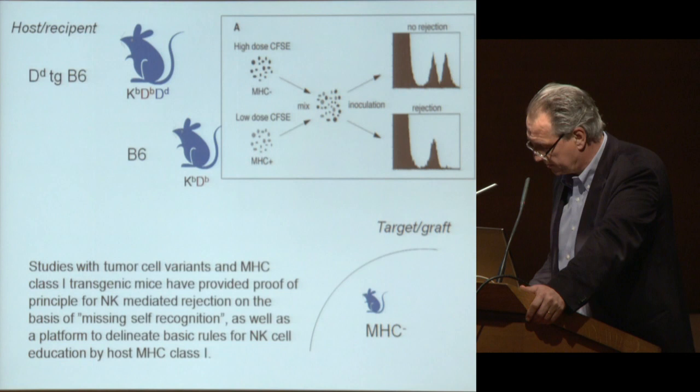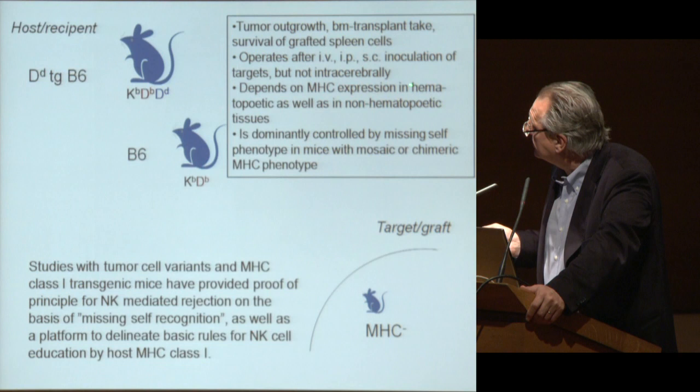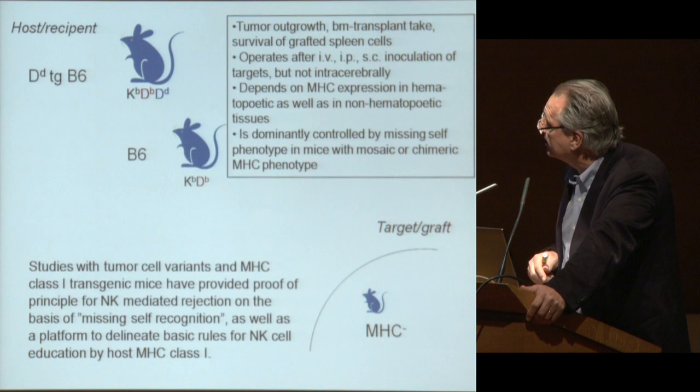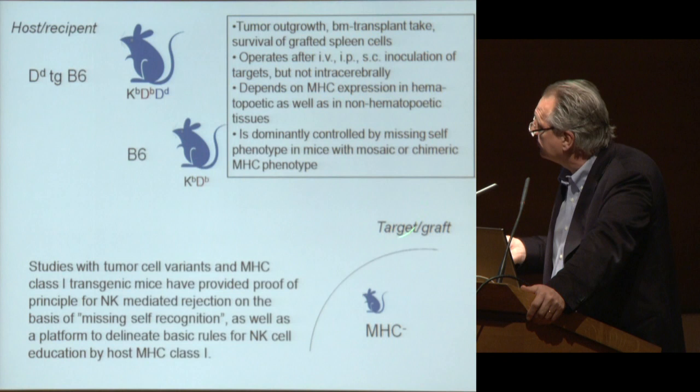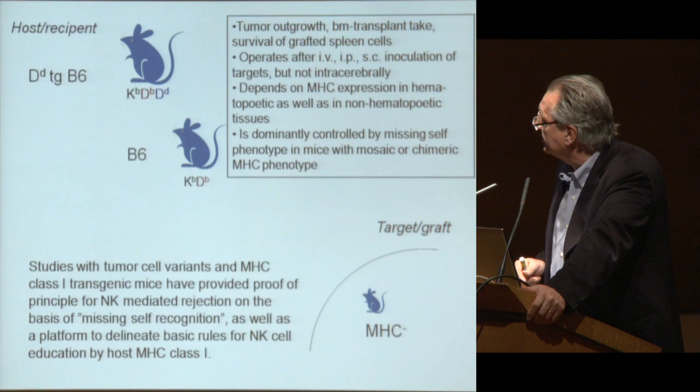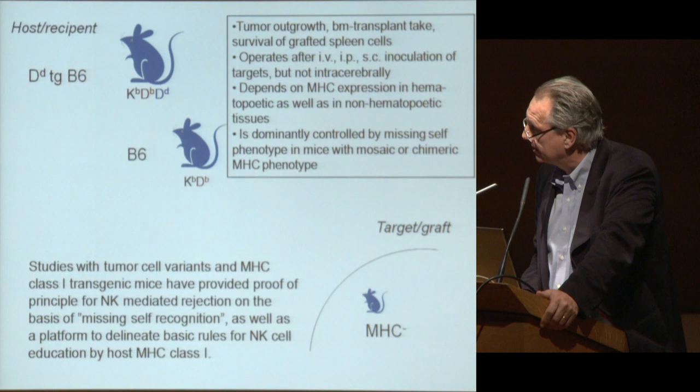This works in all locations where you inoculate the tumor cells, except intracerebrally, where there is very low expression of class 1 in the brain and for some reason missing self-recognition doesn't work there. But it works in all other parts of the body that we have investigated. There is evidence from different types of studies that this is really controlled by a mechanism in the host environment that teaches the NK cells which MHC class 1 molecules to regard as self, and to detect whether they are absent or not.